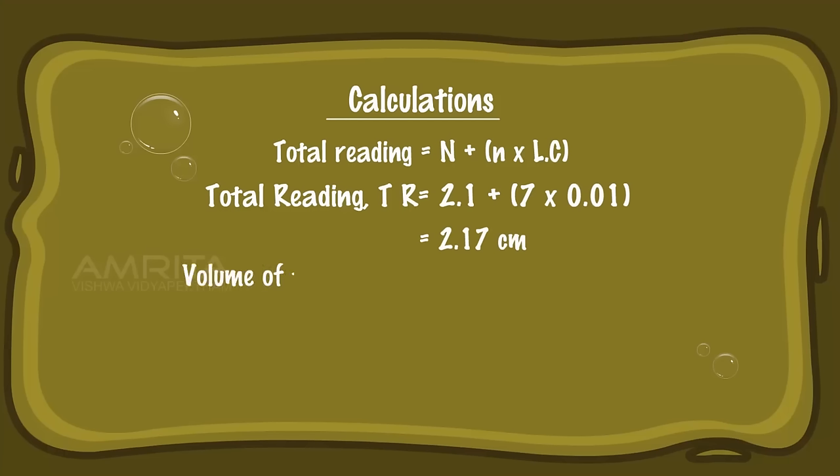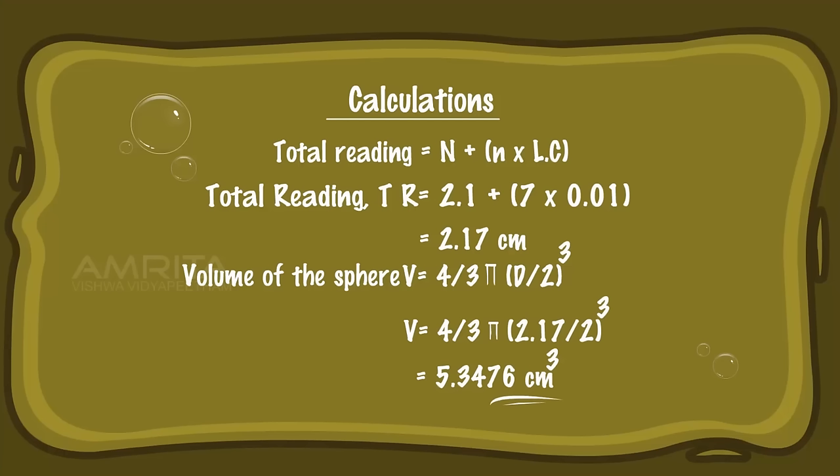Volume of the sphere: V = (4/3) × π × (D/2)³ = (4/3) × π × (2.17/2)³ = 5.3476 cm³.